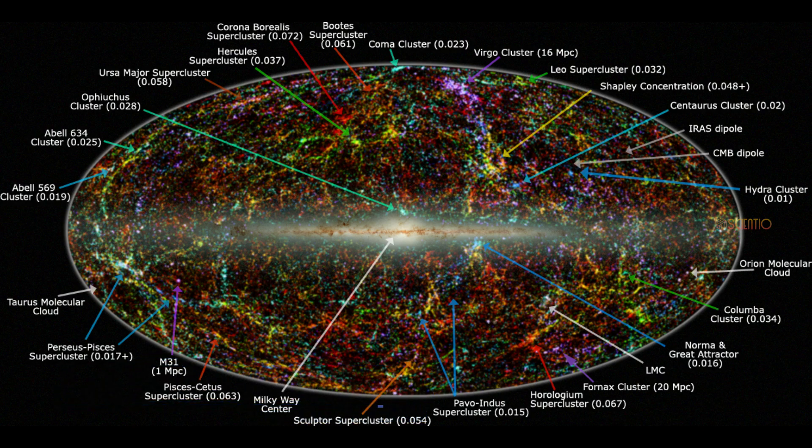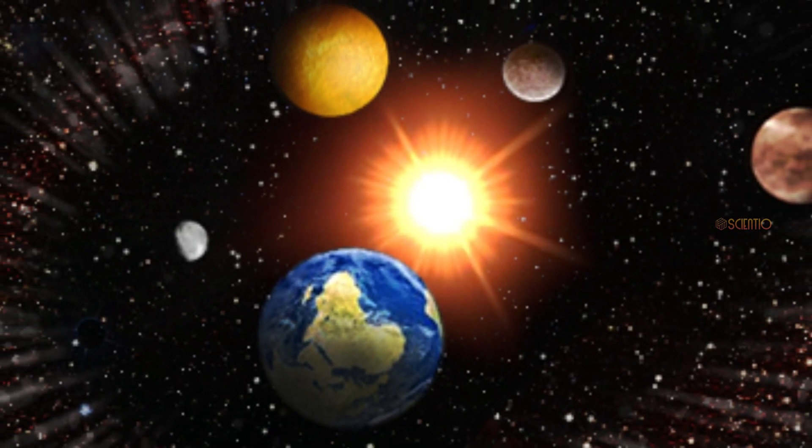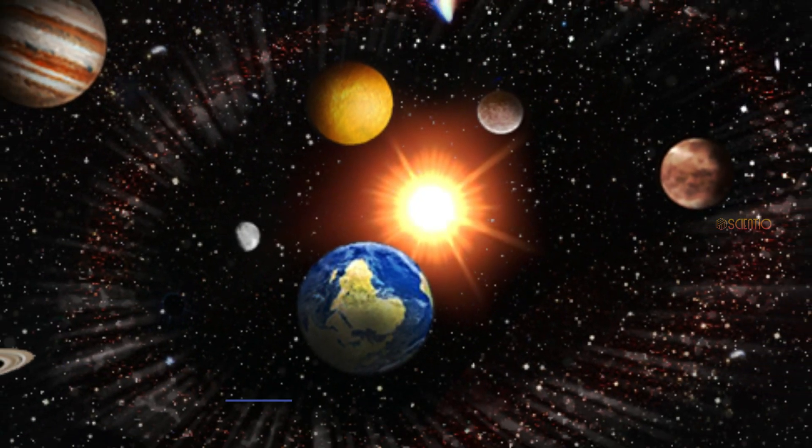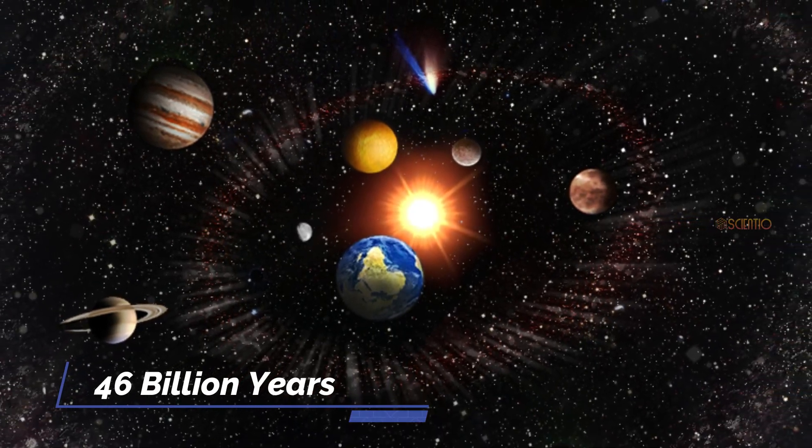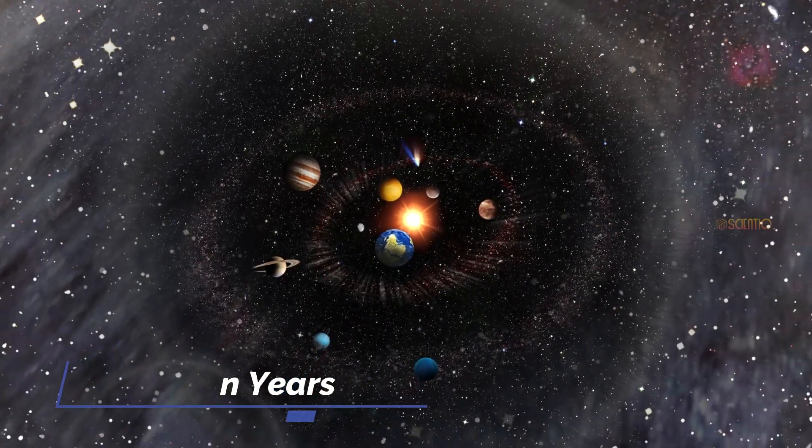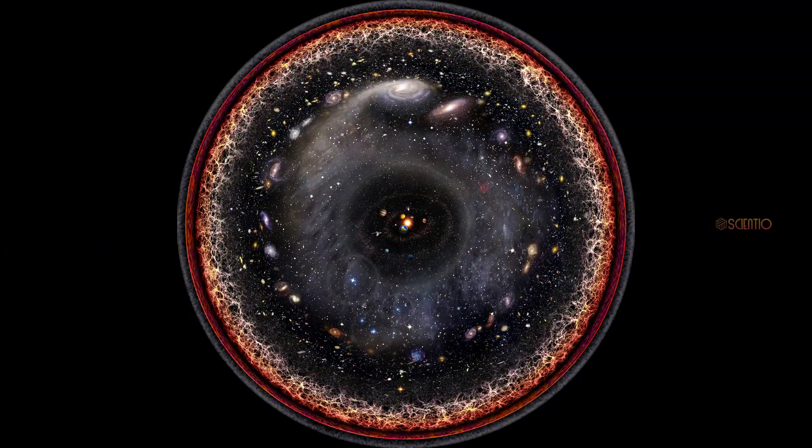Since the edge of the observable universe is always moving further away due to the expansion of the universe, it's tricky to give an exact time estimate. However, as of now, the furthest point we are able to observe is thought to be around 46 billion light-years away, which would take around 46 billion years to reach at the speed of light.